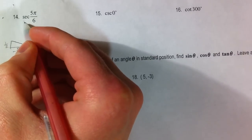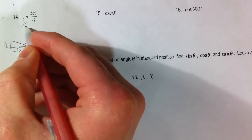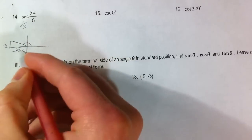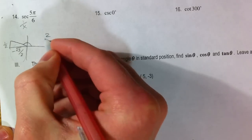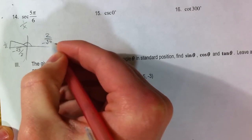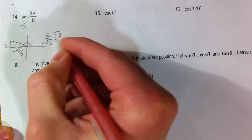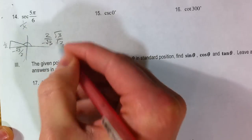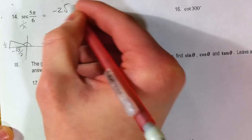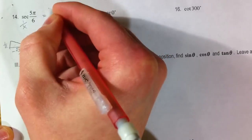I want the reciprocal of the cosine. So that's 1 over x. So I'm going to take my x and just flip it over: 2 over negative root 3. Multiply by root 3 over root 3 until you get negative 2 root 3 over 3.